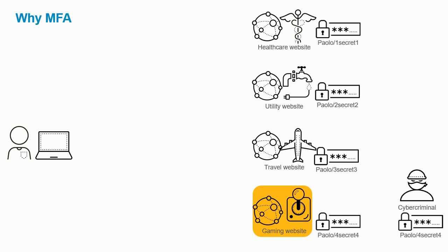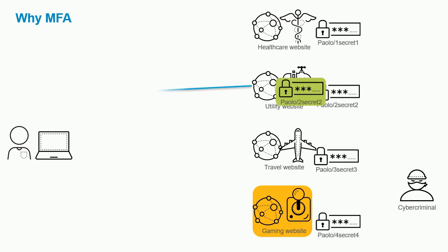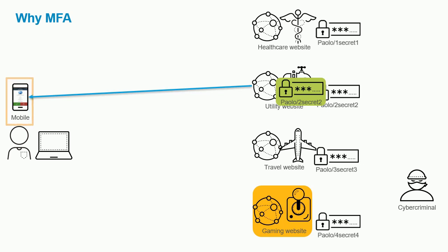The problem with this behavior is if a cyber criminal is able to compromise any single service — say a less protected gaming website — and harvests that user's username and password, they could decipher the pattern and make slight tweaks. For example, changing the password from 4secret4 to 2secret2, then attempt to use that credential to log into different websites — the healthcare website didn't match, but the utility website does.